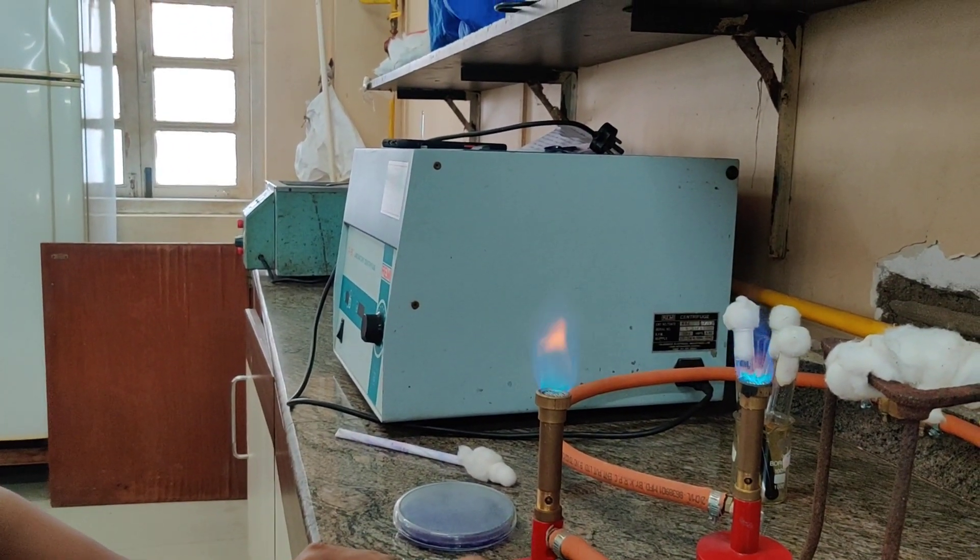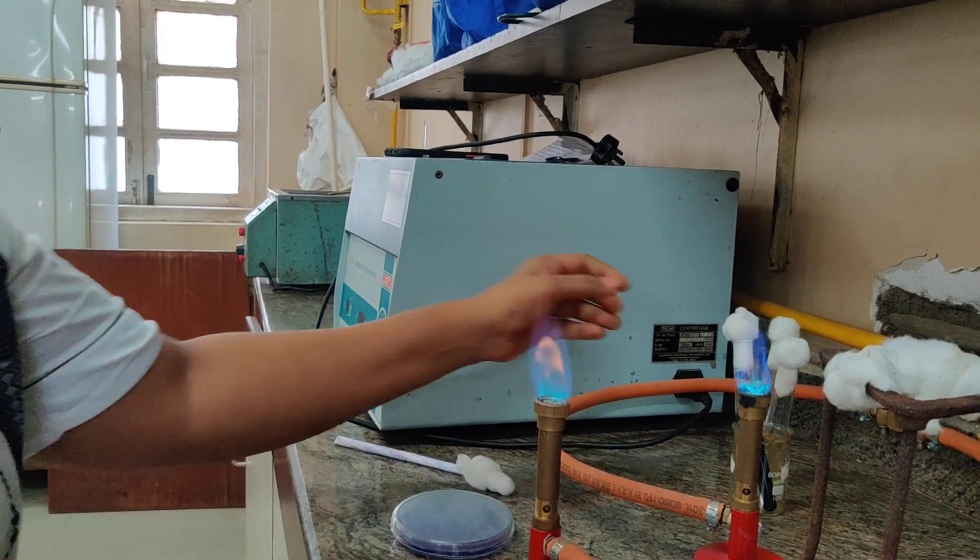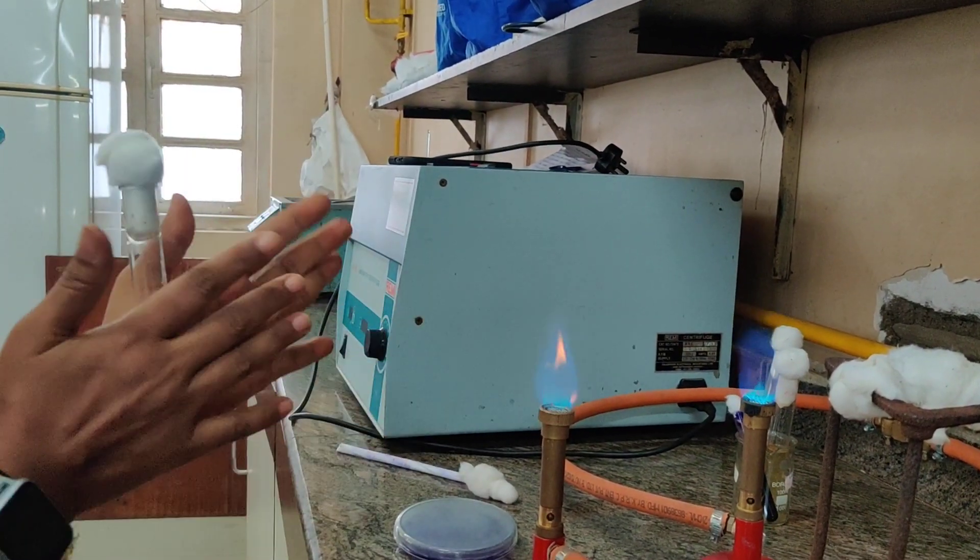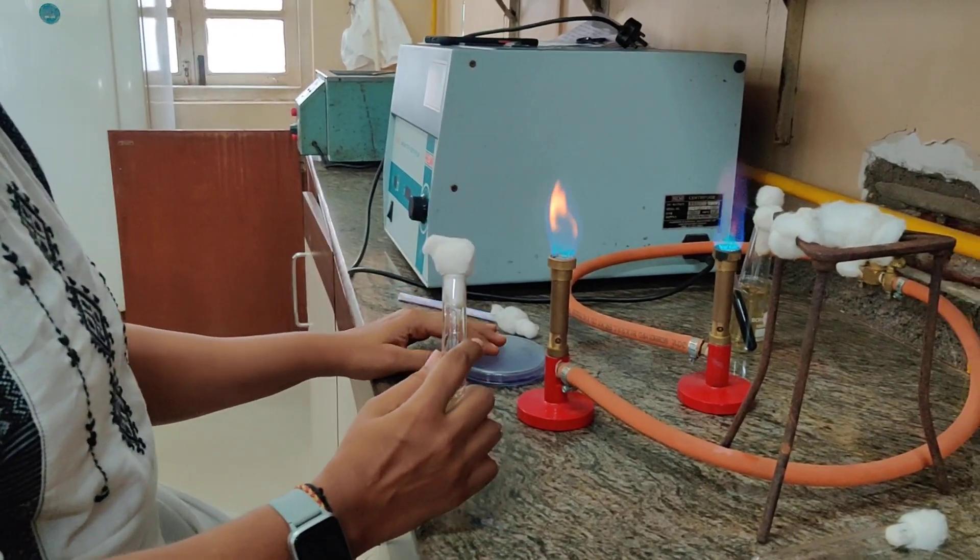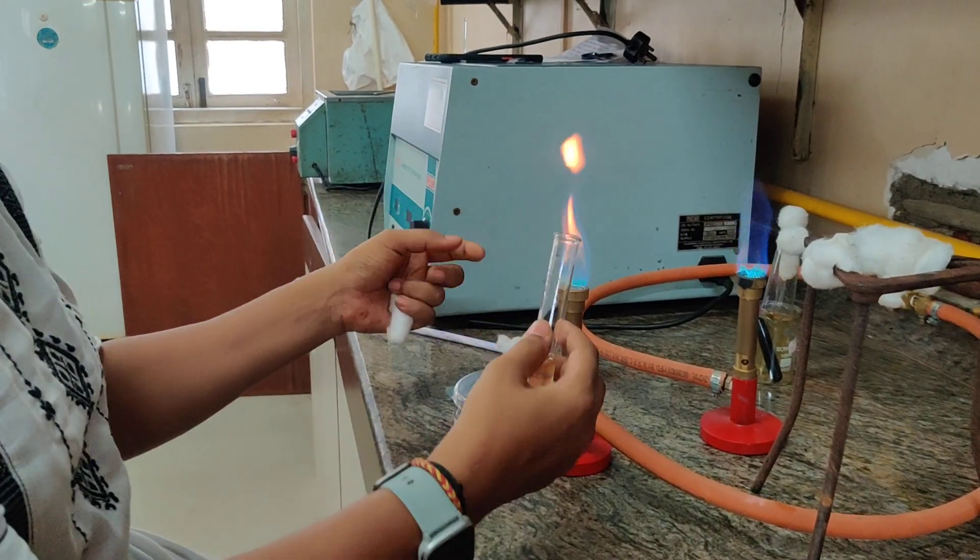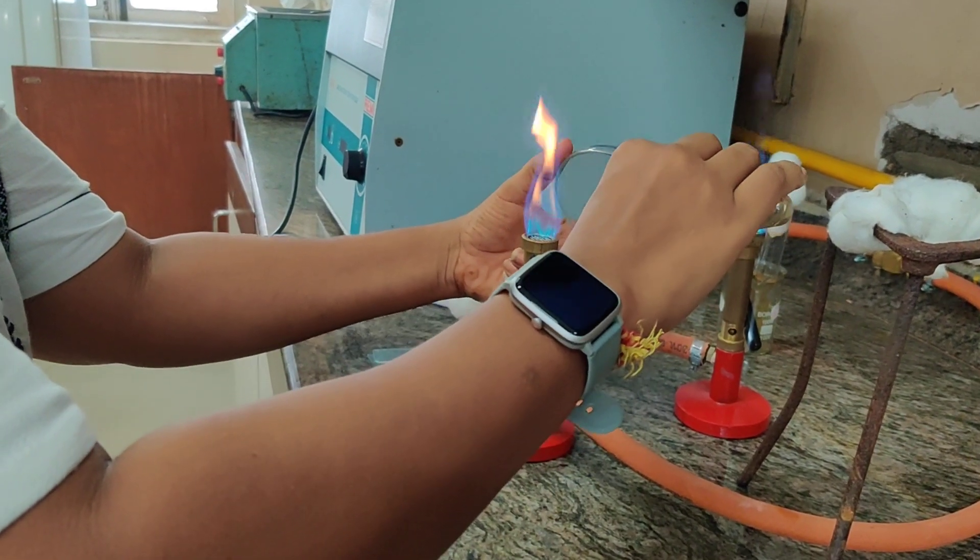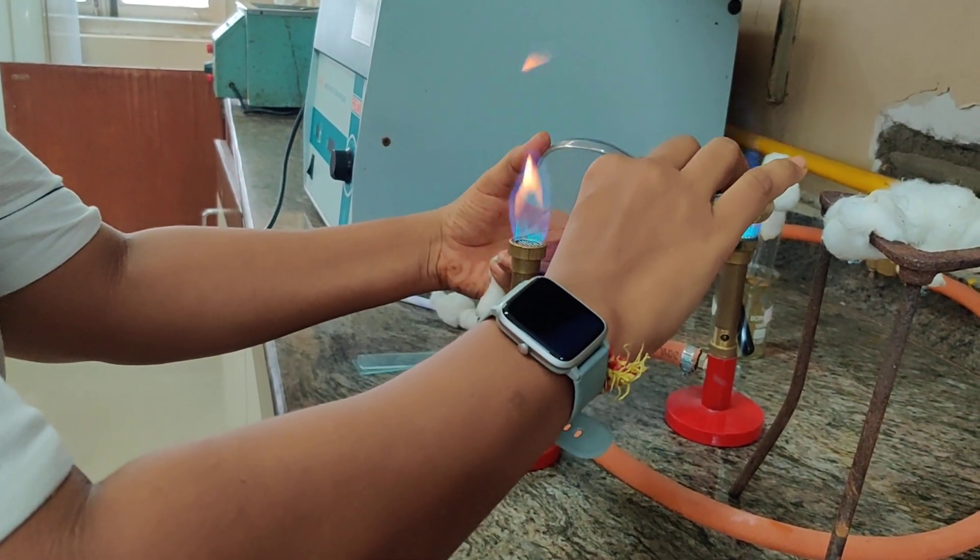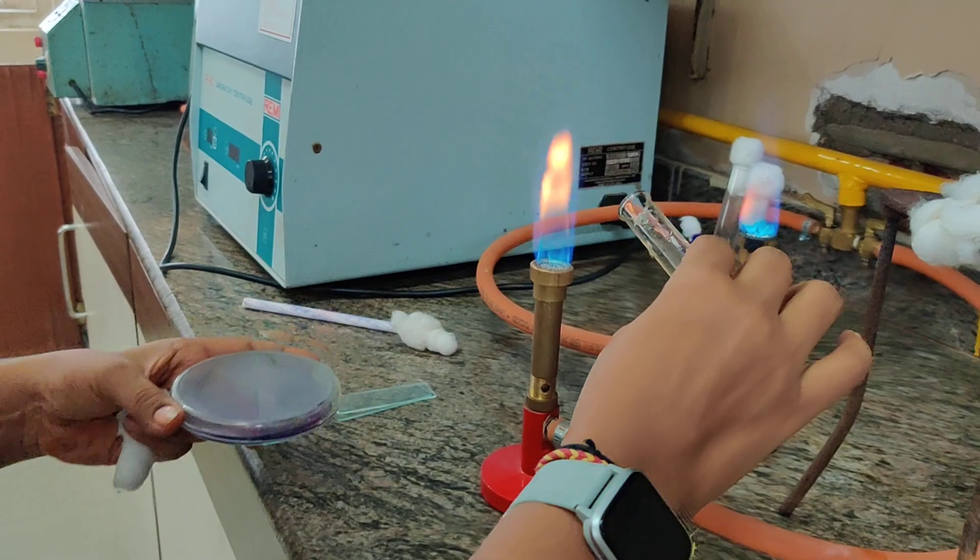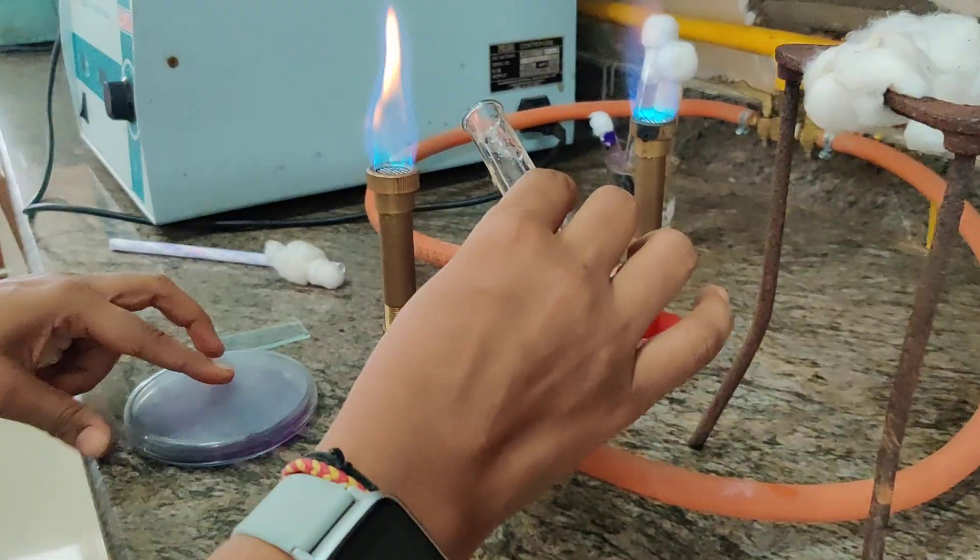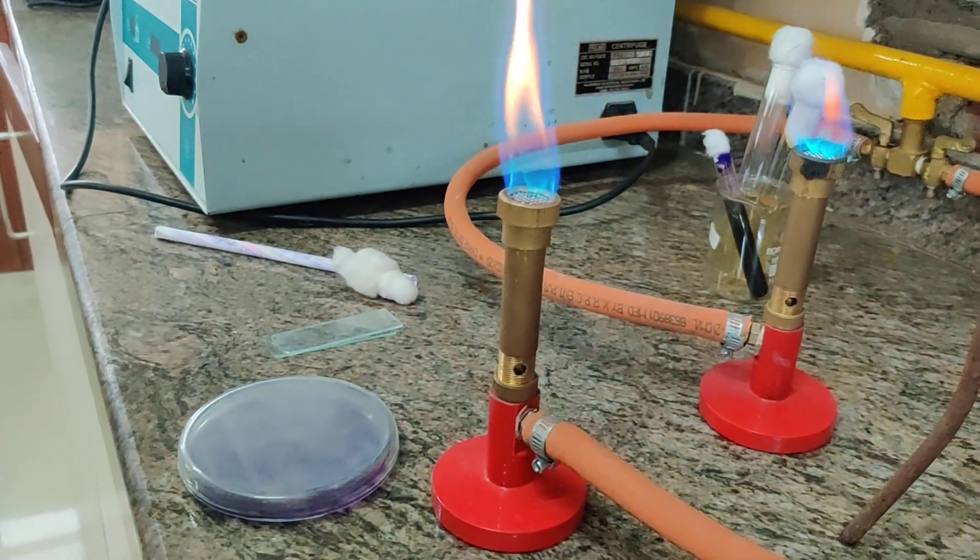We will allow it to solidify and then we will add the second layer of nutrient agar butt. Now that it has solidified, we are going to take our second molten nutrient agar butt and we are going to pour it over the first layer which was a tilted layer, and we are going to now allow it to solidify without any slides, that is straight.